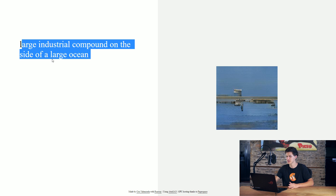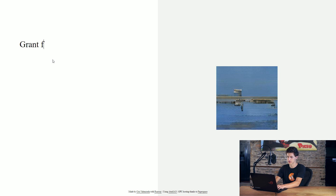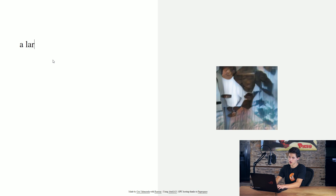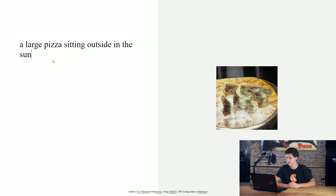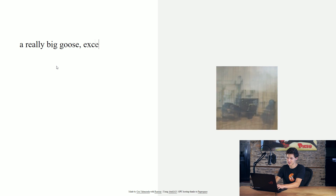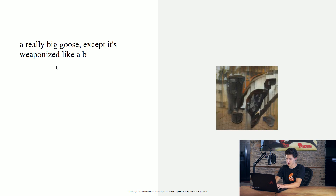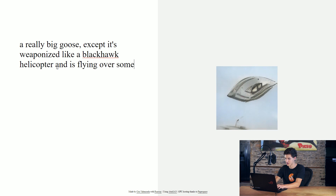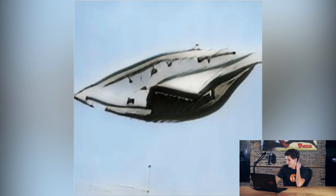It's kind of weird — you can create a ton of things, though it does struggle with more abstract prompts. For example, if I type 'Grant from CGC Weekly wearing his wonderful CGC Weekly shirt,' we get something that is nothing close to what we're looking for. But it really helps if you're very specific. For example, 'a large pizza sitting outside in the sun' — there is a pizza. For some reason this is oddly good with pizzas. Here's one I did earlier: 'a really big goose, except it's weaponized like a Black Hawk helicopter, and is flying over some bad guys.' And look — we have what appears to be a hybrid between a goose, a Black Hawk helicopter, flying over some bad guys.